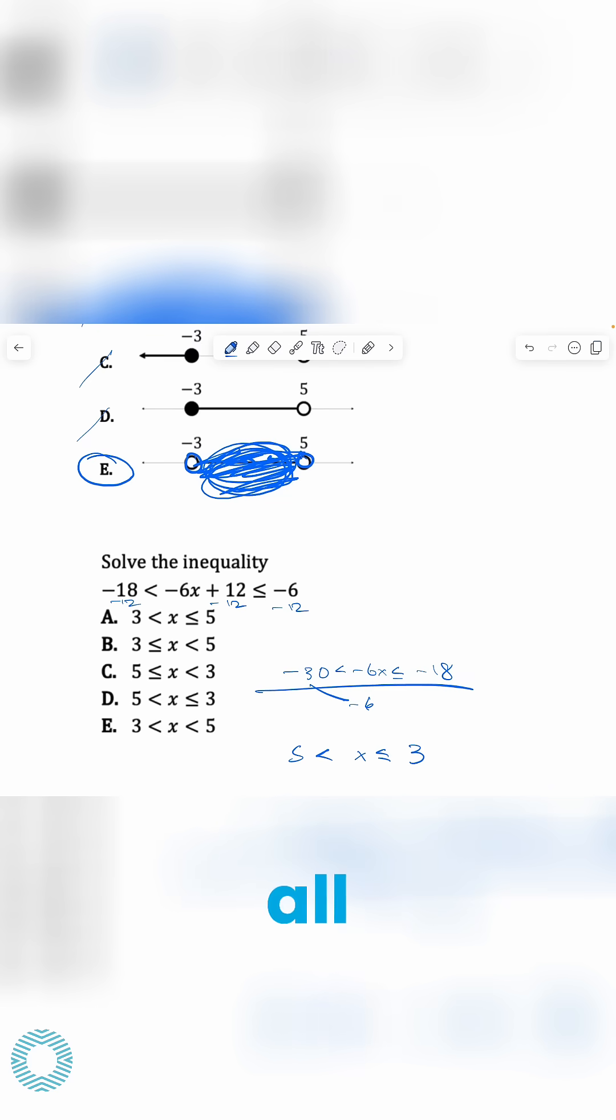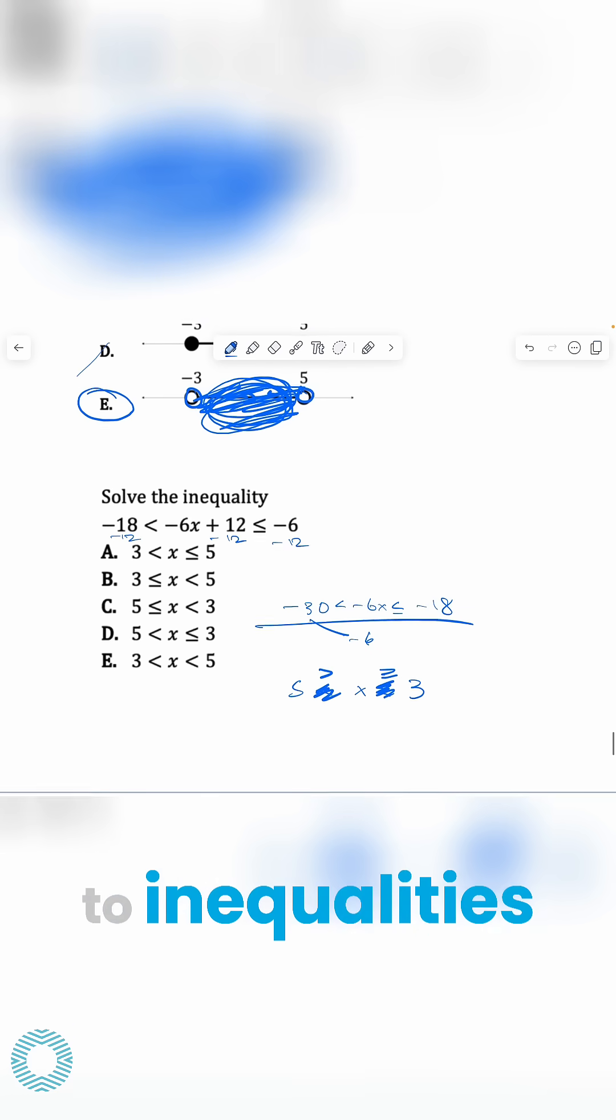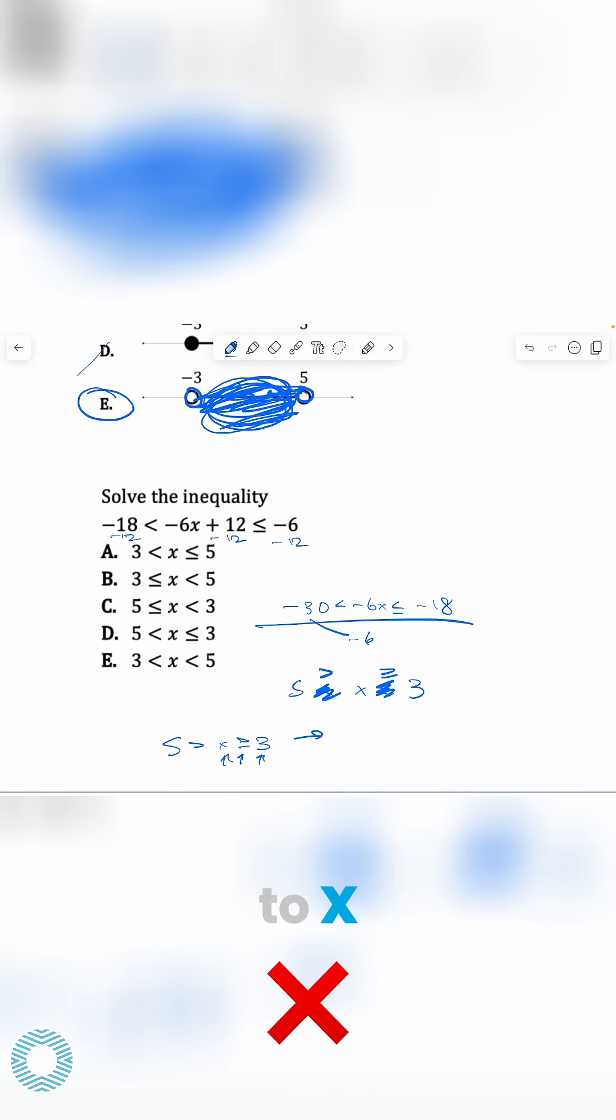But you're going to have to flip all the signs, because that's what multiplying or dividing by a negative number does to inequalities. So now you have five is greater than x is greater than or equal to three, which I would rewrite as, again, it's saying three is less than or equal to x.